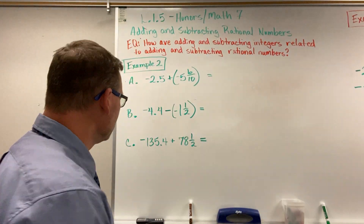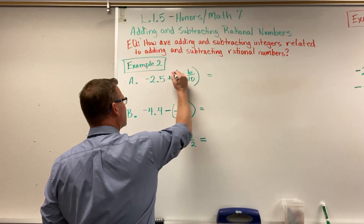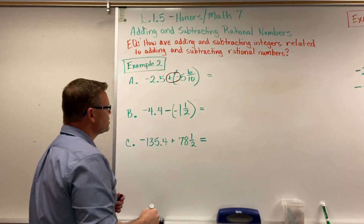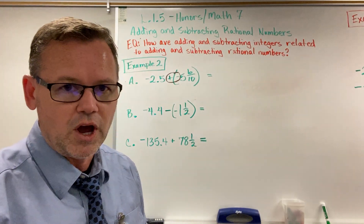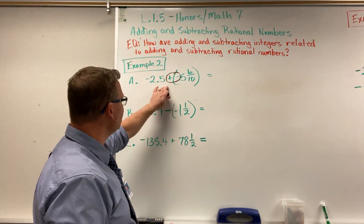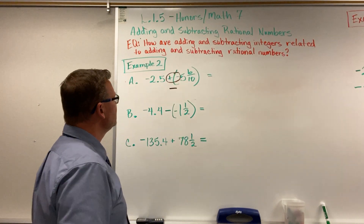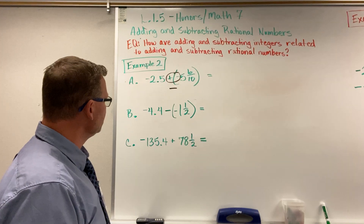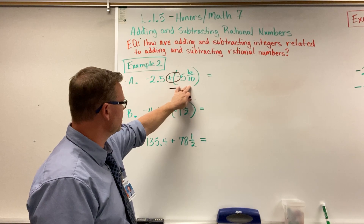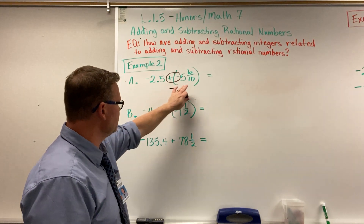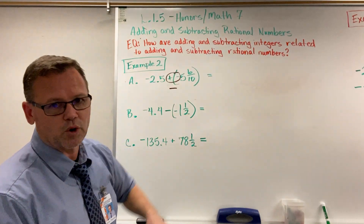Here's the first thing. When I look at problem A, the first thing I see is that I have two signs — a plus and a minus sign — in between these two terms. I have to combine those. If you remember, a positive and a negative is going to be a negative. If the signs are different, they're negative. I've got a decimal here and a mixed number here. They have to both be in the same format for me to actually perform this addition or subtraction problem.